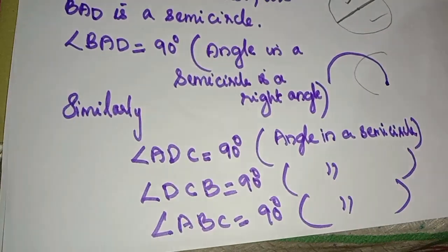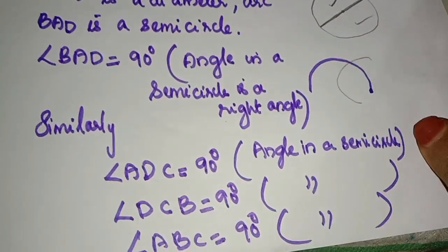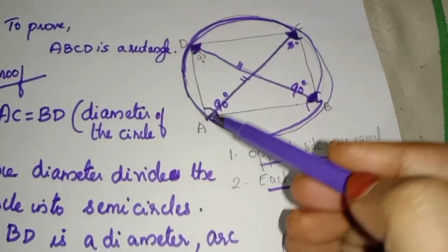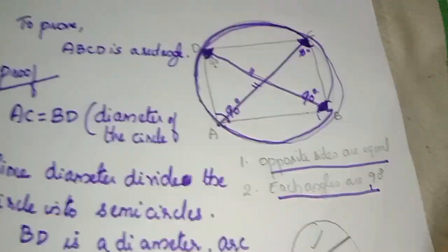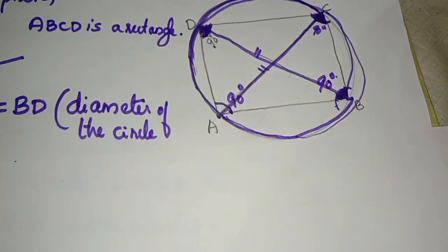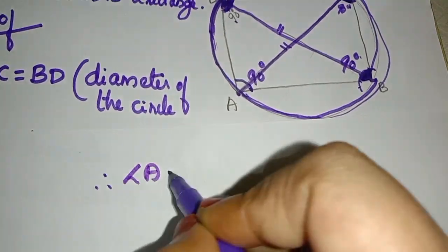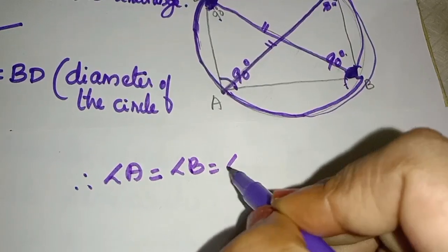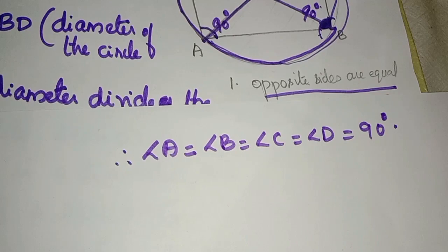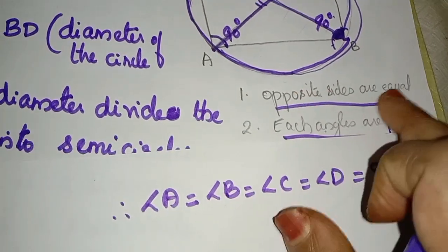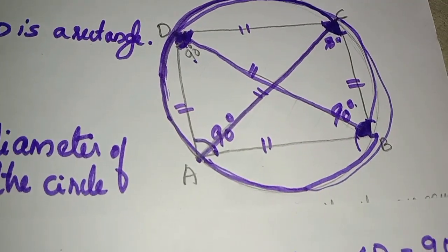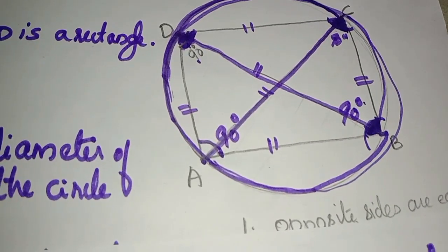All 4 angles are 90 degrees. We will prove it: 2 sides are the same, 2 triangles are the same.